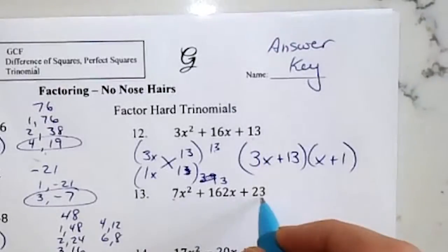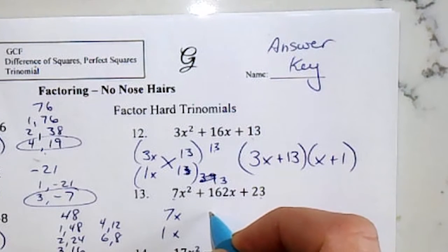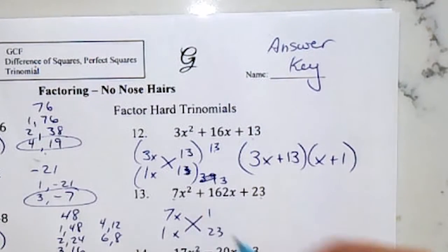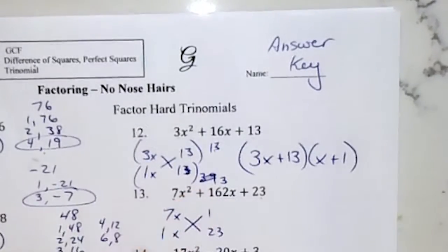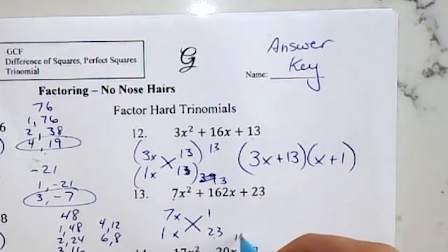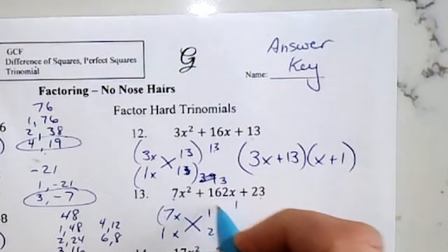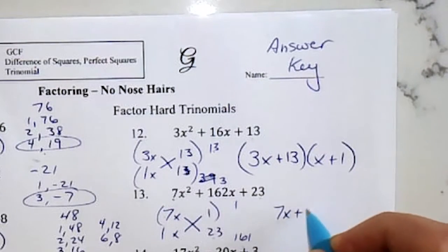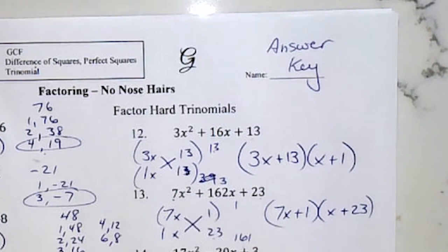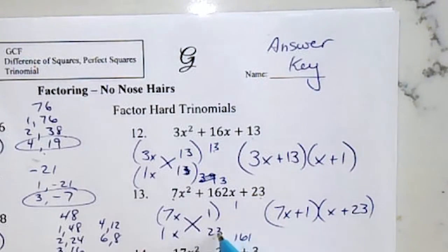Okay. More primes. So I'm trying to get 162. 7 times 23, 161 plus 1, it works. So 7x plus 1 is my first one, x plus 23. Just like that. If you don't get it the first time, erase your numbers, switch them up.